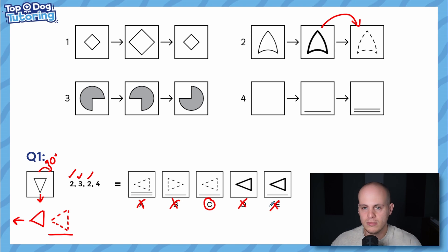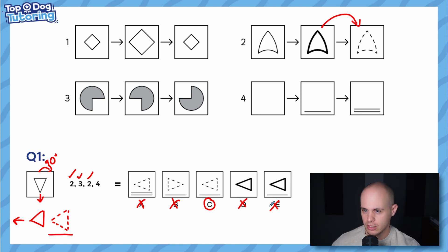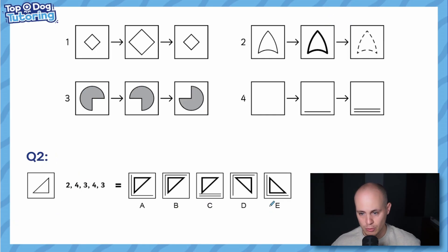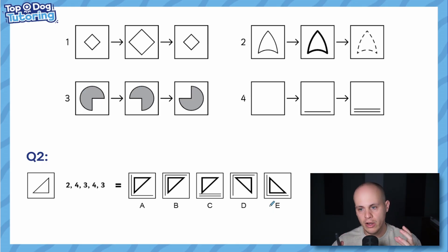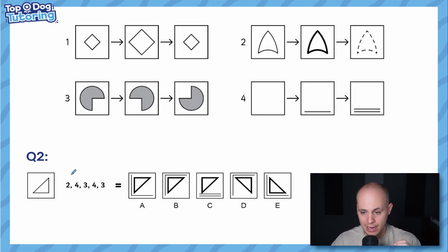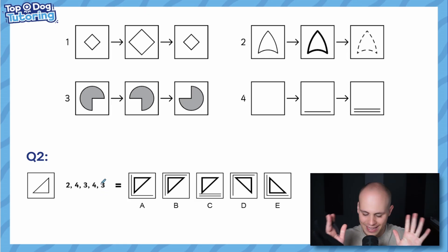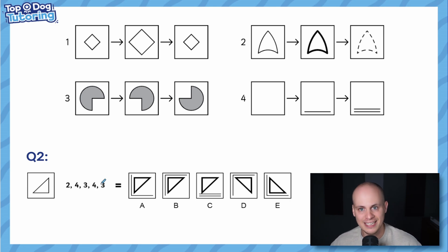Now for the hardest question possible — five operations: two, four, three, four, three. The key learning point is it's absolutely crucial to follow the sequence from left to right and not jump ahead to do different ones first. Have a go yourself before seeing the walkthrough.